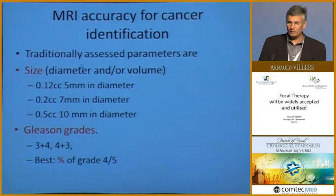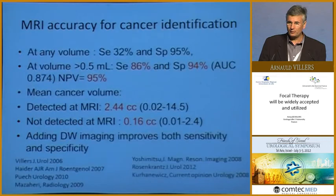The traditionally assessed parameters include size — translation between volume and diameter — and Gleason grade. The percentage of cancer with grade 4 or 5 may be the most accurate parameter, as supported by Dr. Frigley's work. We have evidence that MRI is accurate for cancer identification, with good sensitivity and specificity for volumes above 0.5 cc.